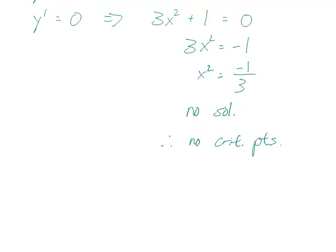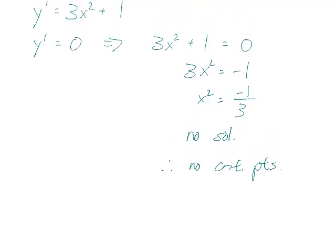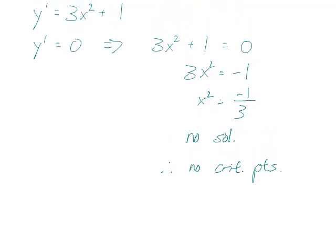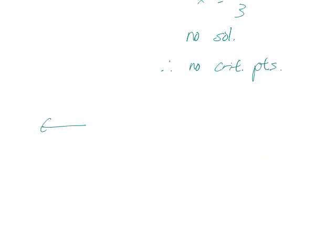Let's move on to increasing and decreasing. Usually when we have critical points, we draw a sign chart and put the critical points on it. But there are no critical points, so we only have one interval to test — that interval being all real numbers.